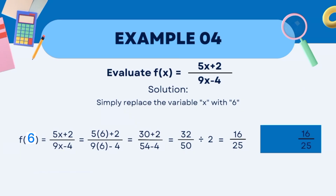In the fourth example, we have f(x) = (5x + 2) / (9x − 4) for x = 6. First, substitute the given value of 6 into the given variable. So, f(6) = (5 times 6 plus 2) over (9 times 6 minus 4).